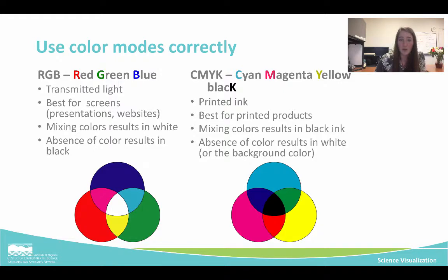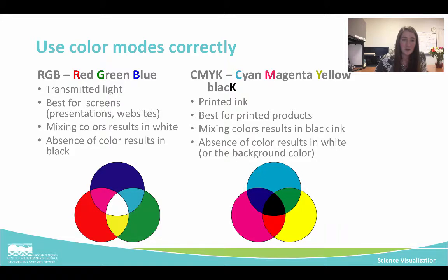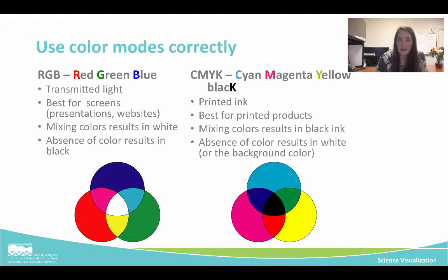We need to make sure we're using color modes correctly. There are two main color modes: RGB (red, green, and blue) and CMYK (cyan, magenta, yellow, and black). Basically, if you're presenting your data graphic on the web or on a screen — if it's not going to be printed — use RGB, because RGB is used for transmitted light. Whereas CMYK is used for printed ink, which you'd know if you've changed toner cartridges on a printer before — you've got four options to change. So just remember your final product when saving your file types.